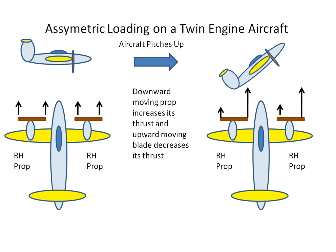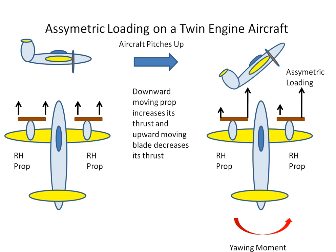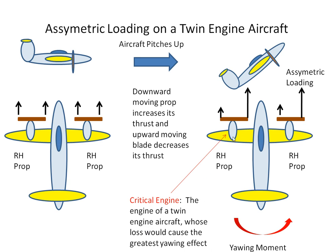As reproduced here, the downward-moving blade will have an increase in thrust and the upward-moving blade will have a decrease in thrust. This thrust acting further from the centerline, and the other acting closer to the centerline, will cause asymmetric loading and give the aircraft a yawing moment. We then designate this engine as the critical engine, because losing it in flight would cause the greatest yawing moment on the aircraft.